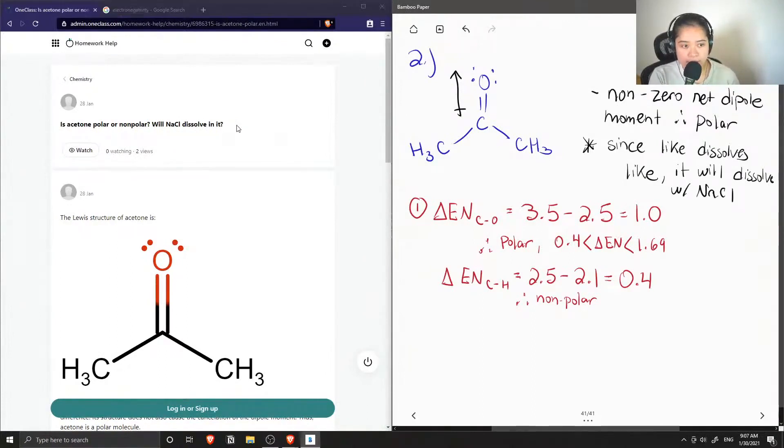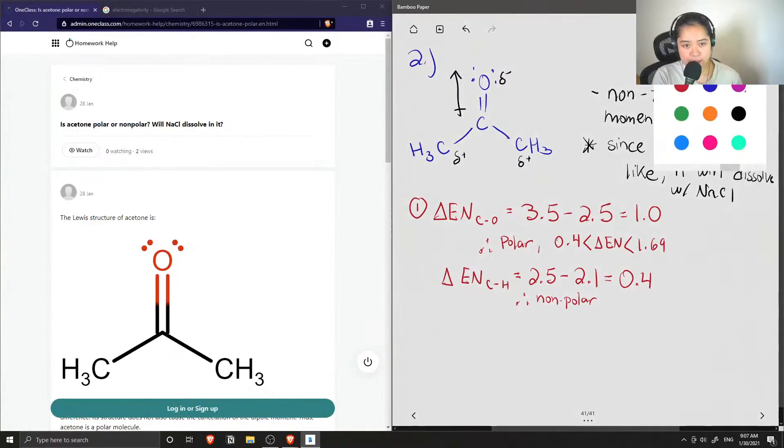Because the oxygen is more electronegative, it makes acetone have partially positive and partially negative sides. So if we had sodium chloride salt, we know that an ionic bond is formed between the sodium and the chlorine.